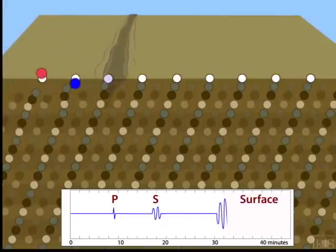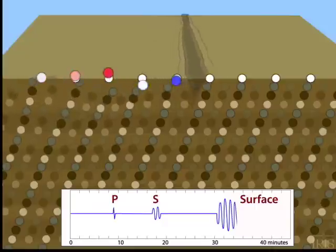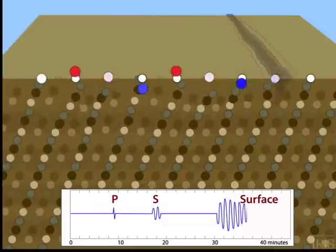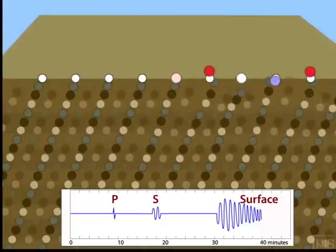Compared to body waves, the surface waves lumber along with a down-back-up-forward motion affecting only the uppermost crust. Surface waves die out with depth.